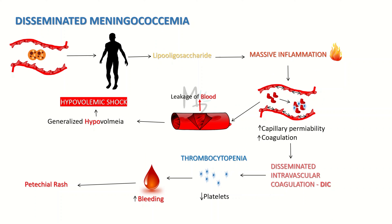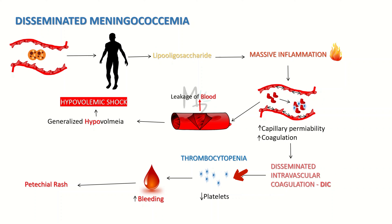In disseminated meningococcemia, Neisseria meningitidis spreads via blood throughout the whole body. It releases lipo-oligosaccharide endotoxin, causing a massive inflammatory response that results in increased capillary permeability and activation of coagulation. This causes disseminated intravascular coagulation (DIC). Coagulation consumes platelets, resulting in thrombocytopenia — decreased platelets — which leads to increased bleeding tendency. This presents as petechial rash over the trunk or lower extremities. Damage to epithelial cells along with increased capillary permeability leads to leakage of blood, causing generalized hypovolemia or hypovolemic shock.